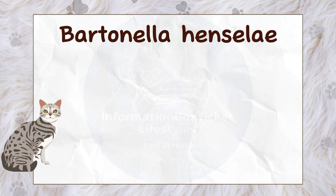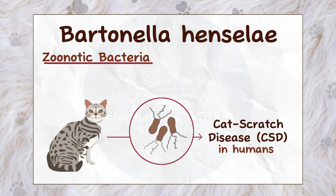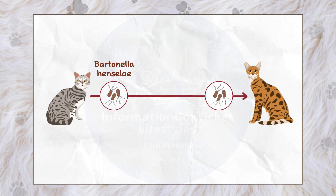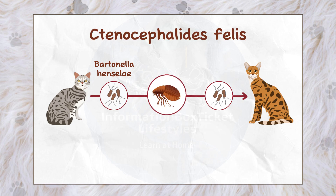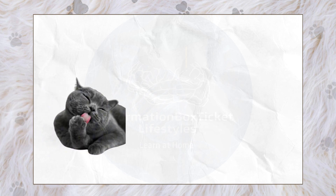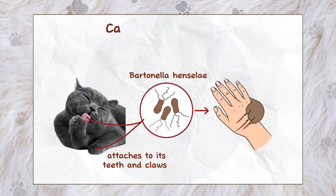Bartonella henselae is a zoonotic pathogen that may cause cat scratch disease (CSD) in humans. Zoonotic bacteria are any bacteria that may be spread between animals and humans. Bartonella henselae passes between cats via a cat flea known as Ctenocephalides felis, which feeds on infected cats' blood and dumps Bartonella henselae-containing excrement on the cat's body. Finally, when the cat grooms or scratches, Bartonella henselae attaches to its teeth and claws, and the cat may infect a human by scratching or biting — hence the term cat scratch disease or cat scratch fever.